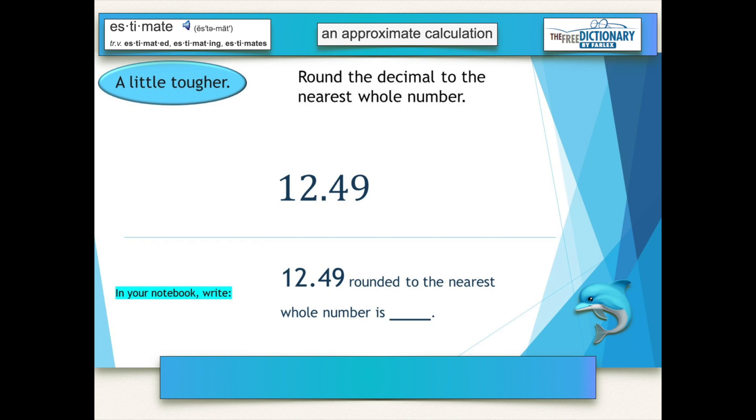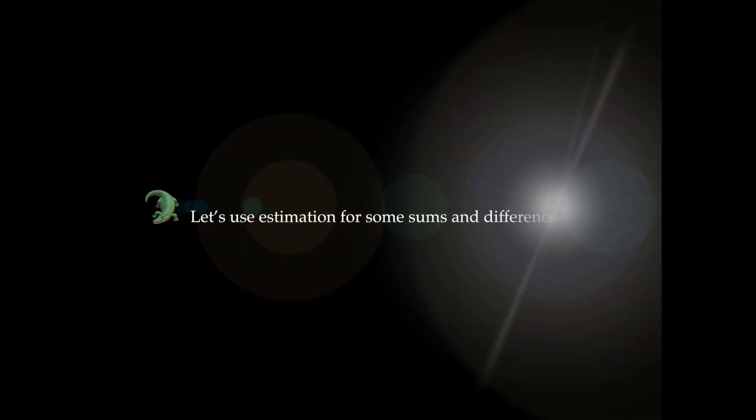Same thing here. Round twelve and forty-nine one-hundredths to the nearest whole number. You do not round up to five first. You do not take that nine and round that four up to a five. Because forty-nine one-hundredths is less than a half. So all we have to do is look at that four.